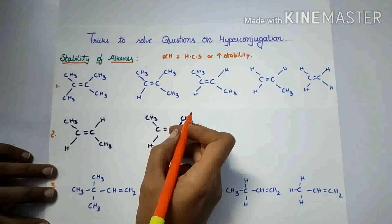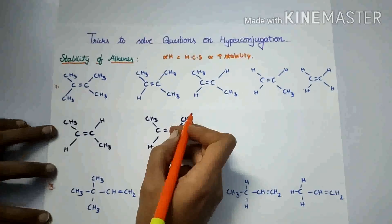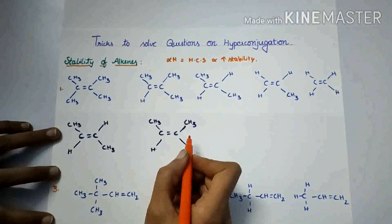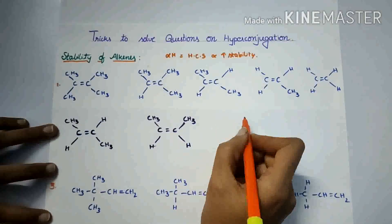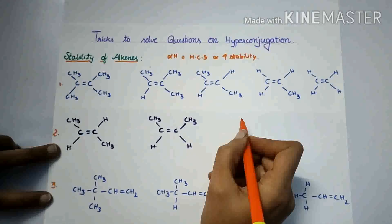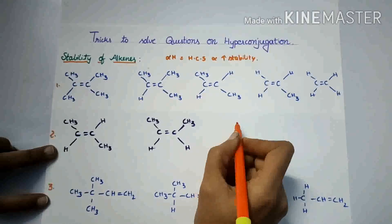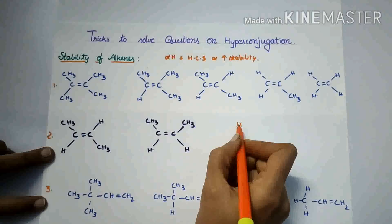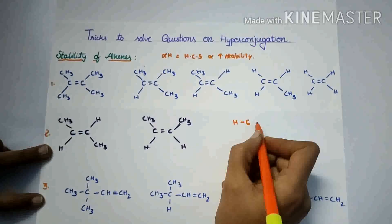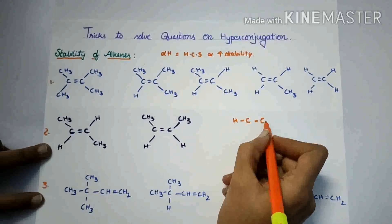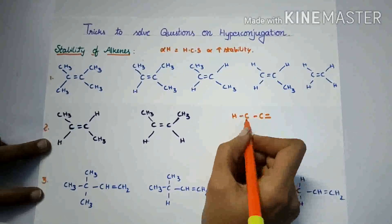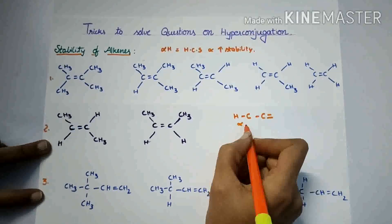For giving the stability order, first we have to identify the number of alpha hydrogens. What are alpha hydrogens for alkenes? The hydrogen which is attached to the carbon which is in turn attached to the double bonded carbon — that is the alpha hydrogen.